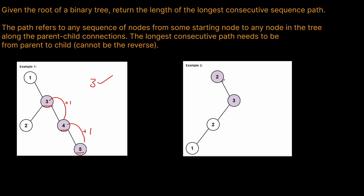In the second example, we start at 2 and the next node is 3, so that's a consecutive chain. From 3 we go to 2, but we can only be increasing, so this wouldn't work despite being 1 apart. Nor can we say 3, 2, 1 starting at 3 — it has to be increasing. We can choose whatever node we want as the parent, but it must be an increasing chain. So here the longest chain is 2 to 3.